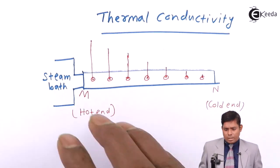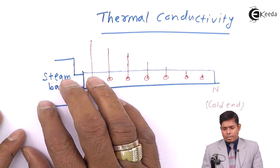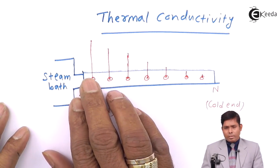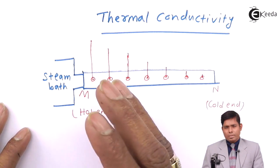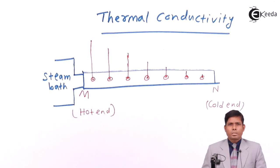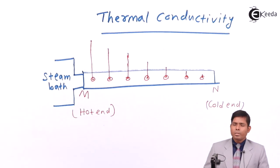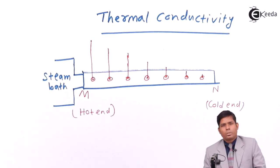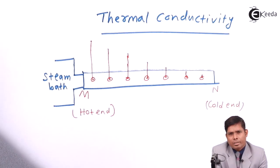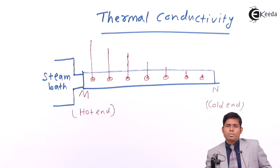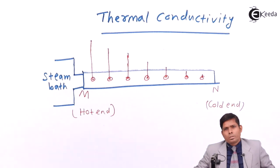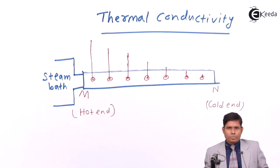The heat we are supplying is carried from one atom to the next, and they transfer energy. Here, the free electrons are responsible for electric current, and in thermal conductivity the free electrons are also responsible for heat current. Therefore, substances which are good conductors of electricity are also good conductors of heat.